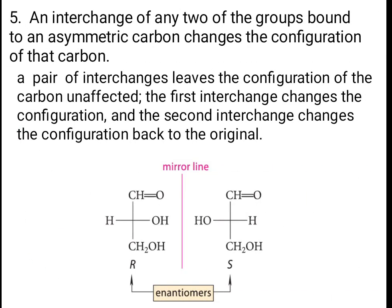An interchange of any two groups bound to an asymmetric carbon changes the configuration of that carbon. A pair of interchanges leaves the configuration unaffected: the first interchange changes the configuration and the second changes it back to the original. If you interchange two groups such as H and OH, you get the enantiomer; if you make two consecutive interchanges, you return to the same isomer.